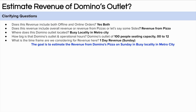The third question we can ask is about the locality of the outlet. Where is it located? This is important because a busy outlet will sell more pizzas than a less busy one. Let's assume the outlet is located in a metro city in a busier area. In the fourth question, we dig into the outlet configuration — how big is it and what are the operational hours? Let's assume the outlet can accommodate around 100 customers and operates from 12 noon to 12 midnight — a total of 12 hours. The fifth question is about the time frame: let's assume we are estimating single day revenue on a weekend, specifically a Sunday.